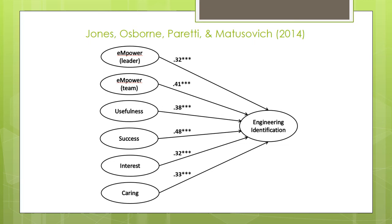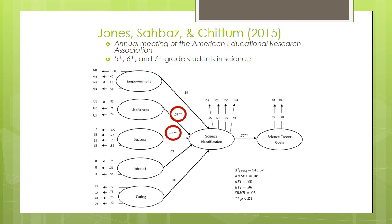In another study, we did something similar with 5th, 6th, and 7th grade students' perceptions of their science class, and we found that only usefulness and success were significantly related to students' science identification. This demonstrates that different components of the MUSIC model may be more influential to students' domain identification in some domains at certain ages.